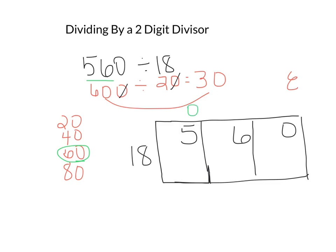So how many times does 18 go into 5? It doesn't, so we put a zero. Remember, we're multiplying — zero times 18 is zero. Subtract, you get a 5. We're going to shoot that up there; 5 goes here. Now I'm going to do my math off to the side — 18 times 3. I get my 3 from my estimate right here.